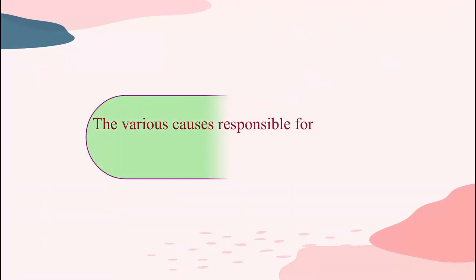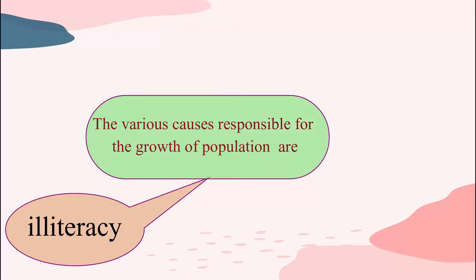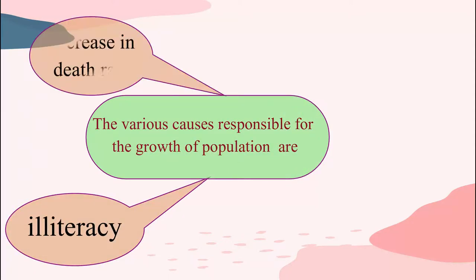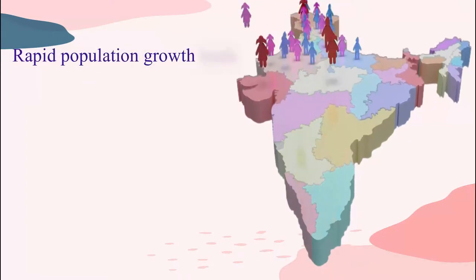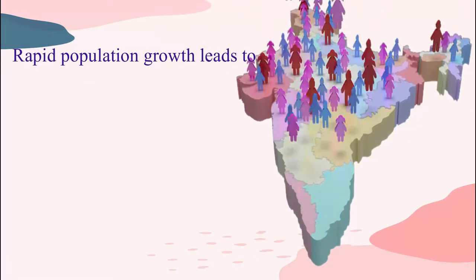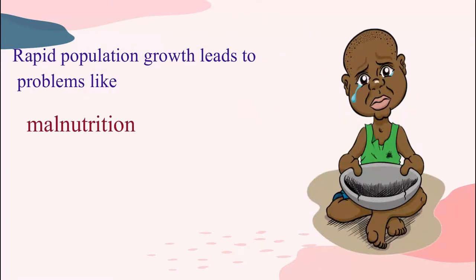The various causes responsible for the growth of population are illiteracy, decrease in death rate, and immigration from other countries. Rapid population growth leads to problems like malnutrition, illiteracy, and over-exploitation of resources, resulting in poor quality of life.